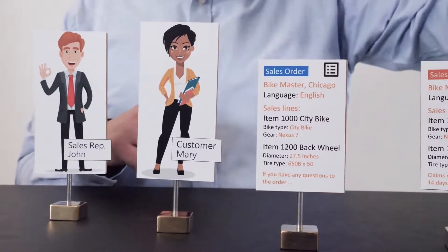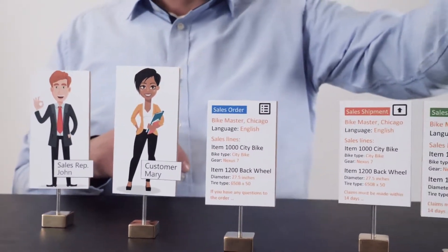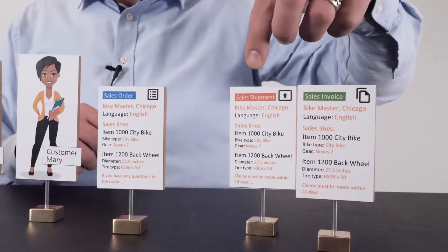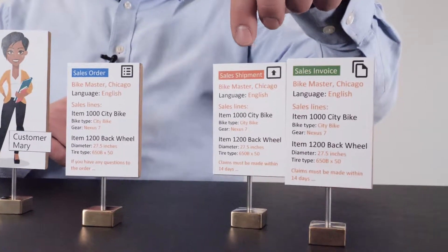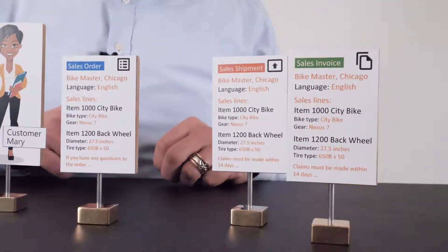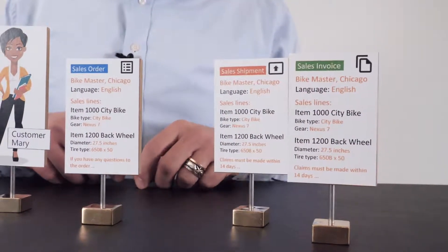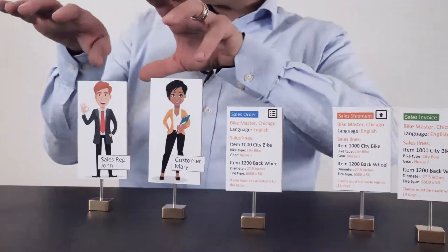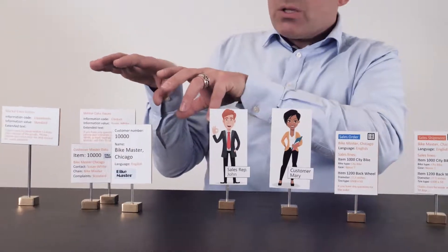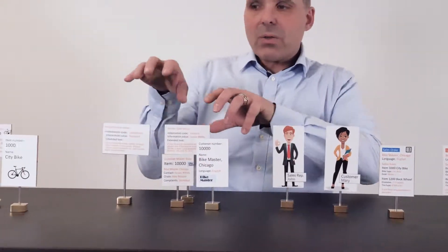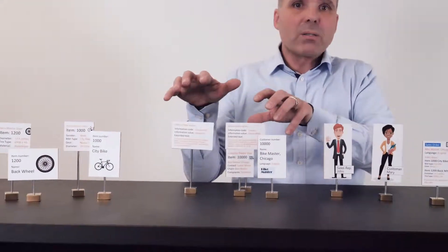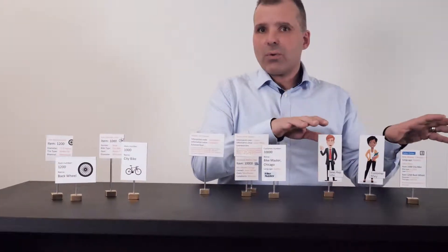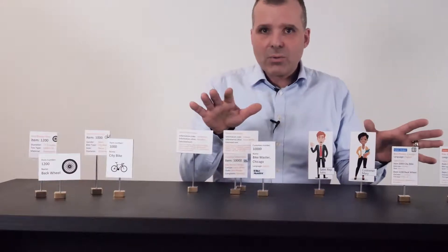When you post the documents, it posts into the sales shipment and the sales invoice. Some information is only printed on those two posted documents and not on the open sales order. With this functionality, everything happens automatically once the setup is done. On the customers and on the items you prepare all the master data once and for all, and when John creates the sales order it all flows automatically — he has to do nothing to make it work.